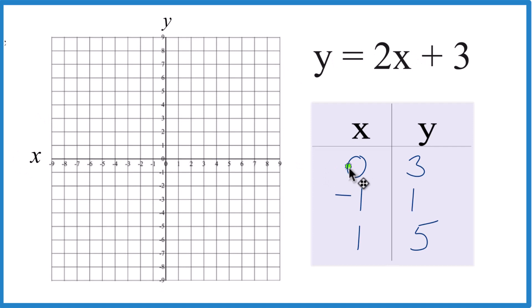Let's start out with x is 0, y is 1, 2, 3. That's our first point. Then x is negative 1, y is 1. Negative 1, 1.